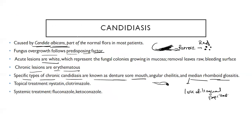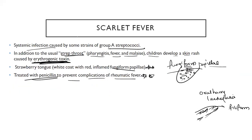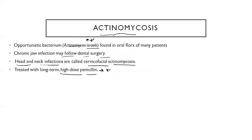Quick review: candidiasis, or oral thrush — whitish lesion that bleeds when removed. The person can also have angular cheilitis and median rhomboid glossitis. Treatment is antifungals. Scarlet fever is caused by group A streptococci. Children with strep throat can present with the fever where the tongue appears whitish with red dots — like a strawberry. The papillae responsible are fungiform papillae, and it must be treated with penicillin to prevent complications of rheumatic fever.